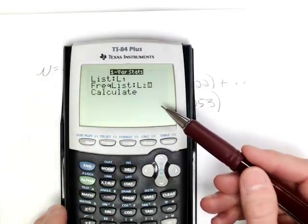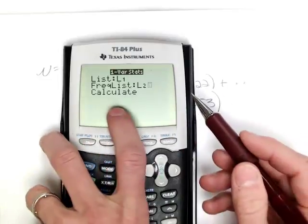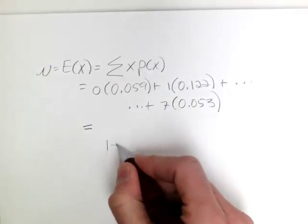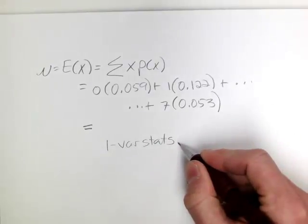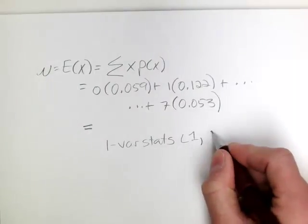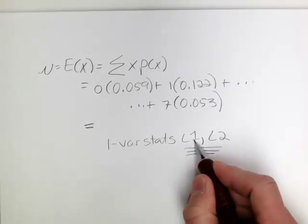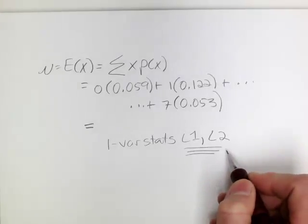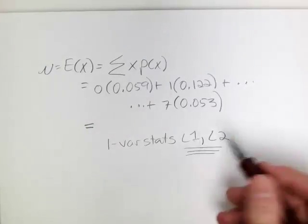So if you have an older TI, your screen will look a little bit different. It will open up to your home screen, and it'll look like something like 1var stats, and it'll open up a parenthesis maybe. What you'll need to do is input L1, L2. So make sure you put in the x list, comma, and then the probability list, and then enter. When you were just getting one variable statistics for a list of values, you just put in L1 and then hit enter.